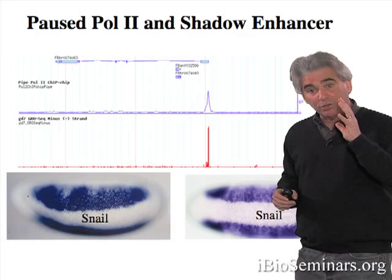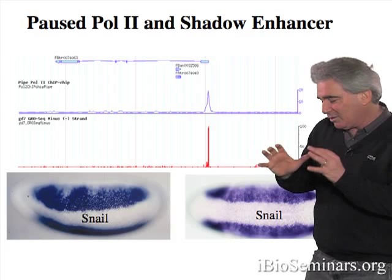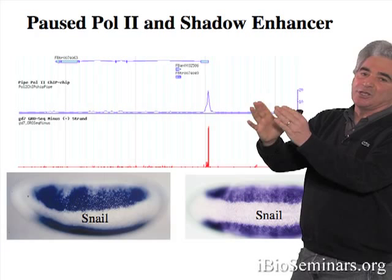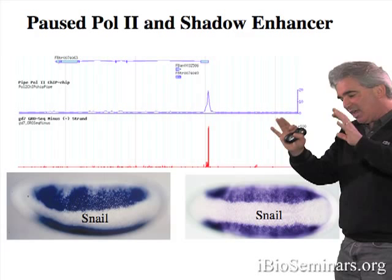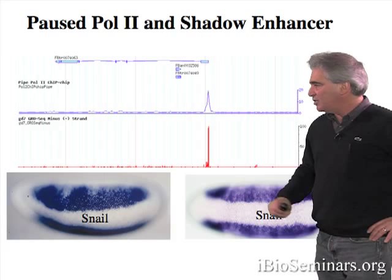I've already alluded to the importance of repression in the early Drosophila embryo. For example, repressors form the two borders of the EF-stripe 2 pattern. The snail repressor establishes the boundary between the mesoderm and the neurogenic ectoderm. Now I want to address how this repression works, and I will turn specifically to the snail repressor.